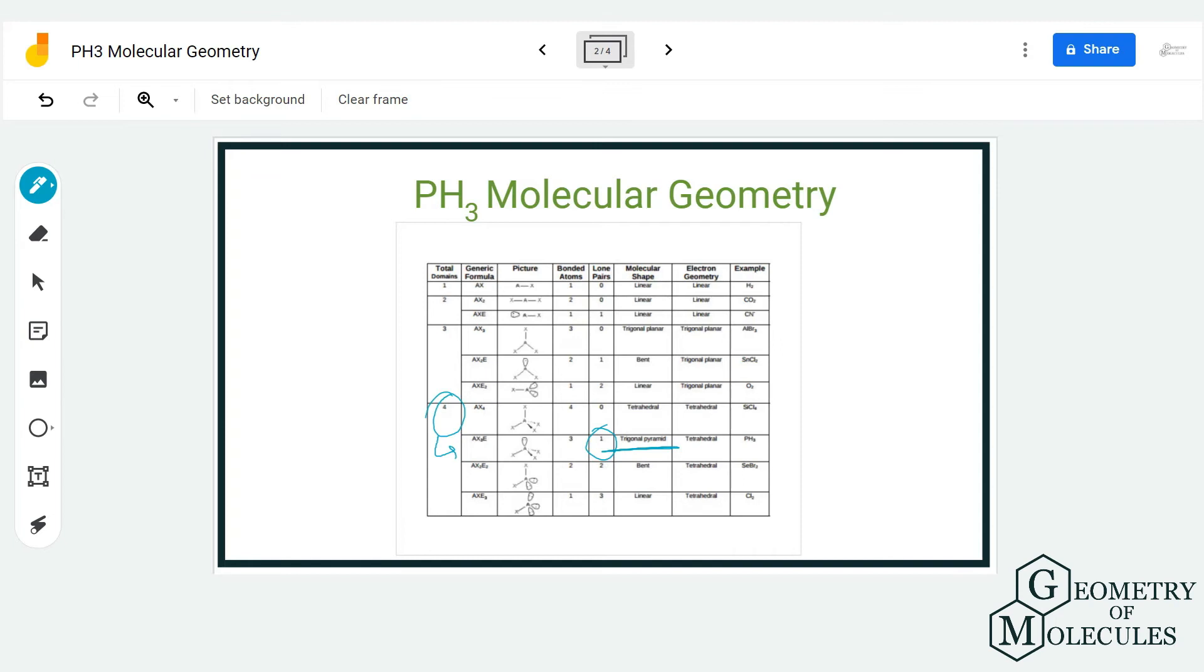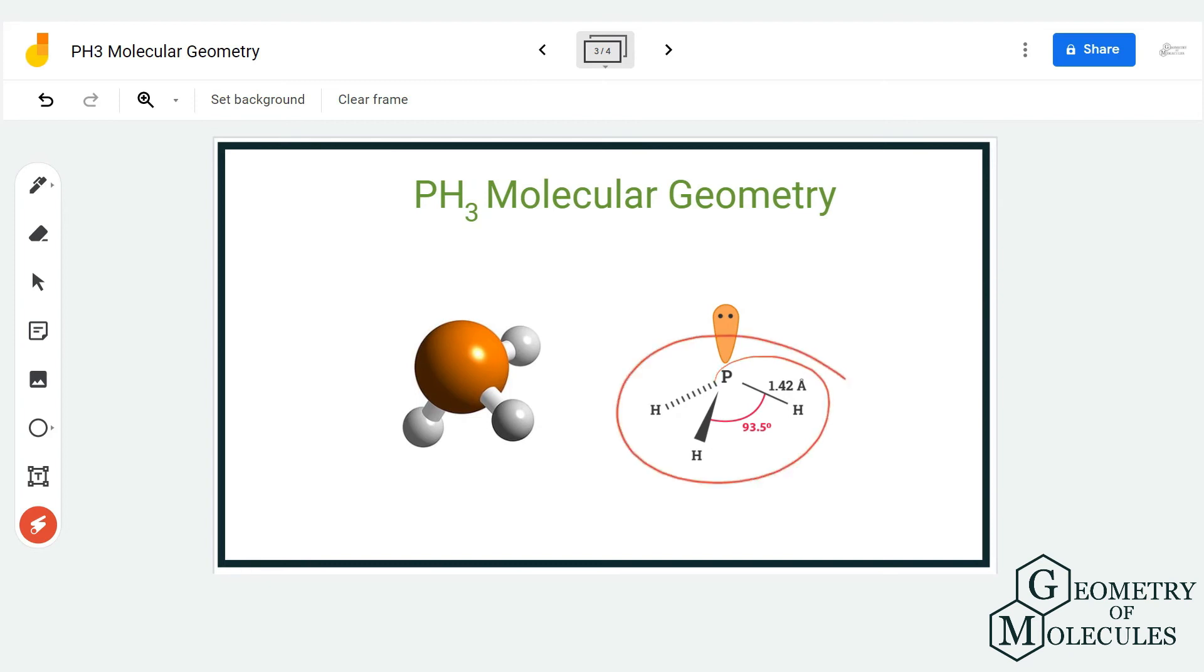So as per this table, the molecular geometry of PH3 molecule will be trigonal pyramidal and the bond angle is shown here. Generally the bond angle is much higher, around 109.5 degrees, but as there is a lone pair present here it will decrease this angle. If there is a lone pair on the central atom it generally distorts the bond angle and hence there is a reduction in the bond angle.